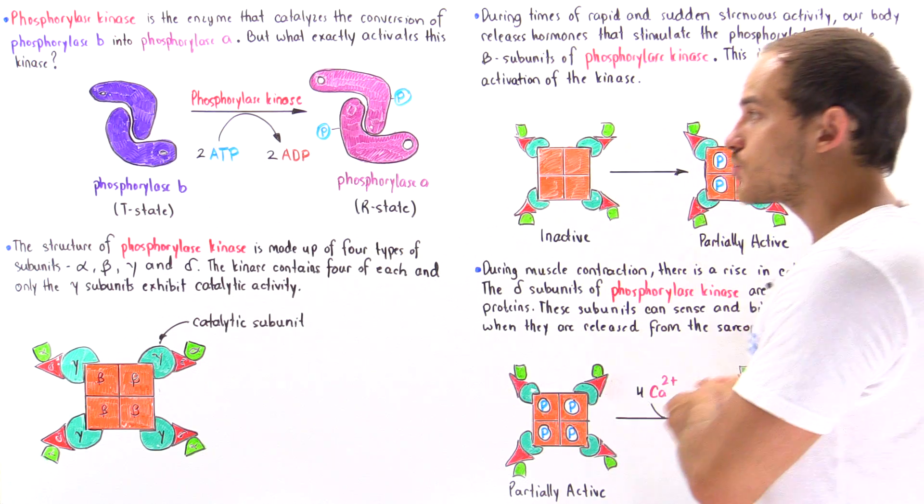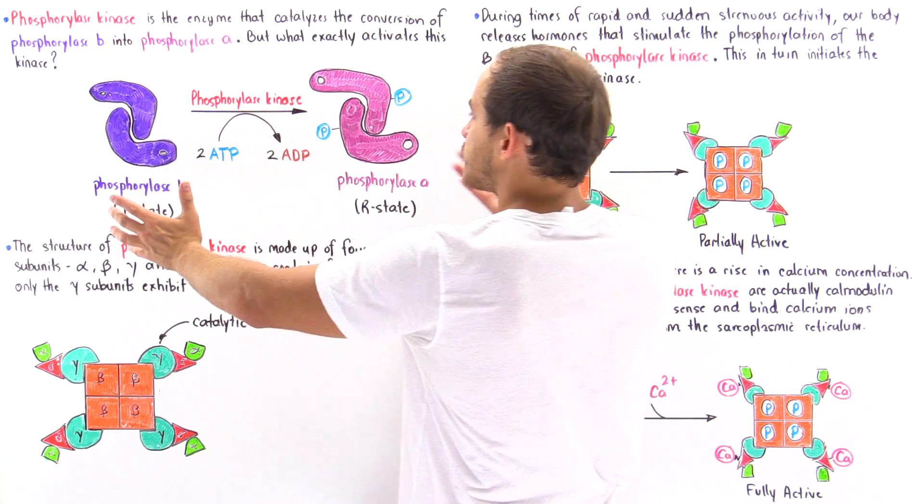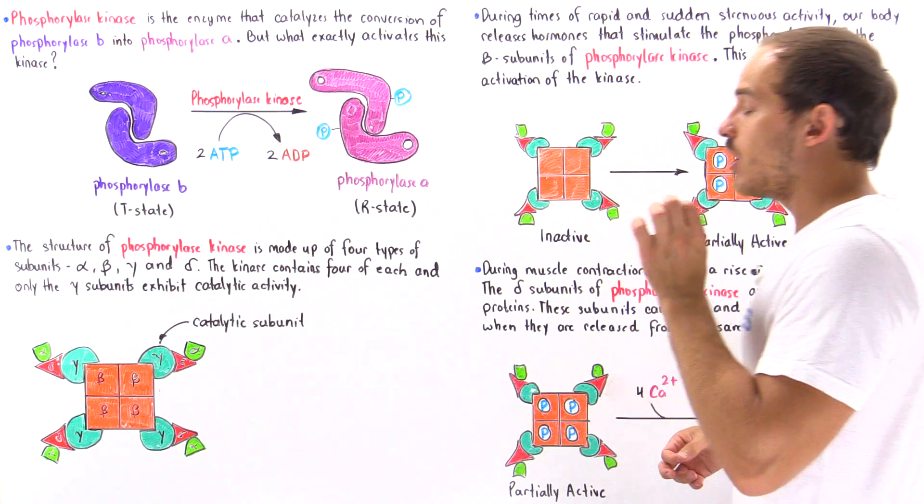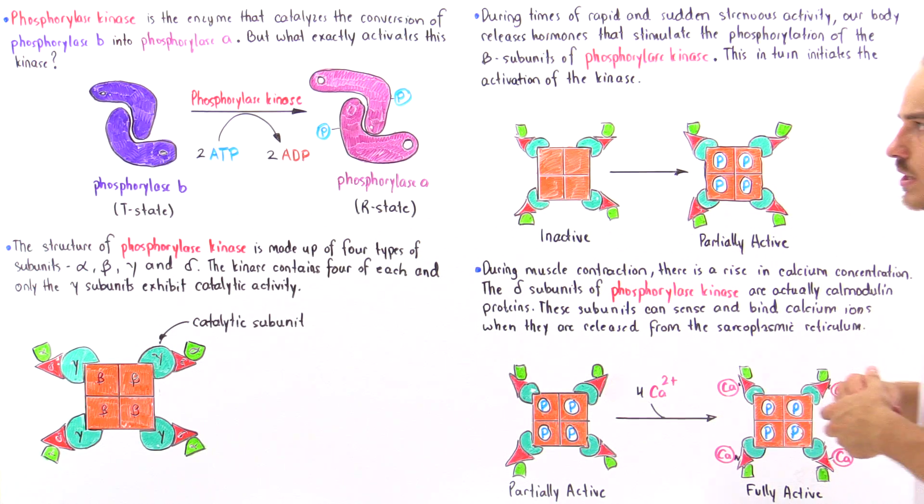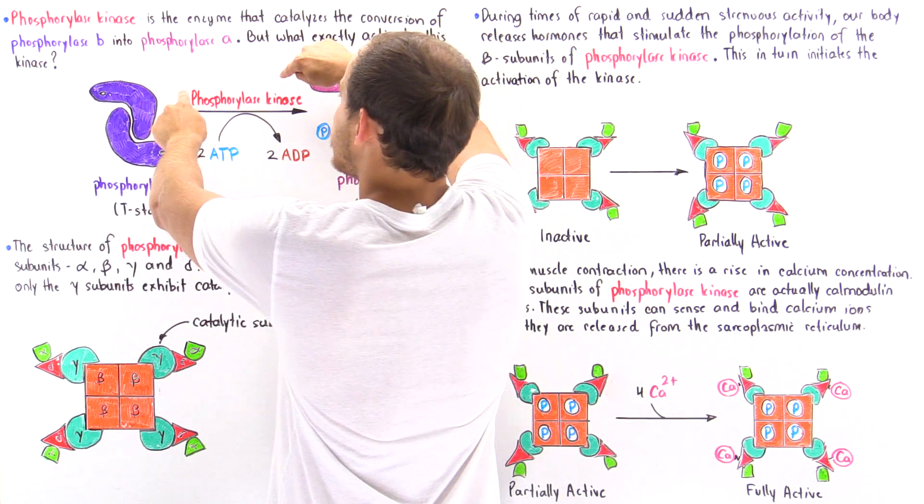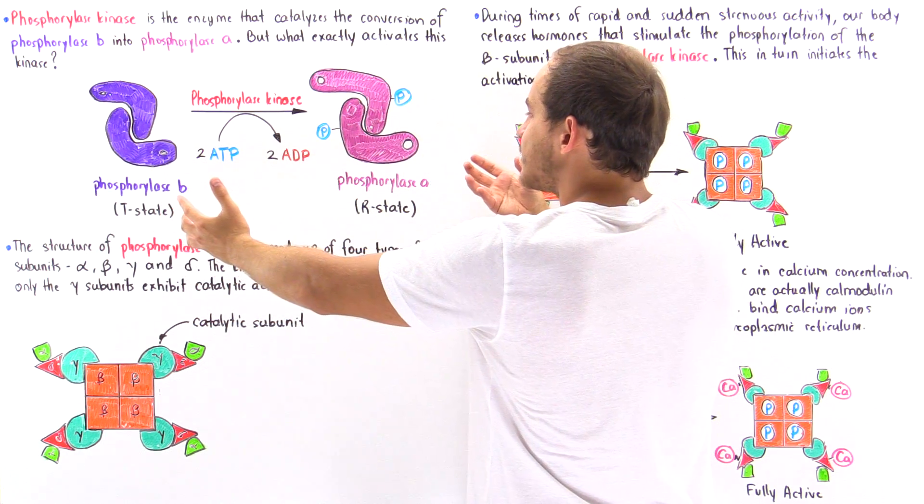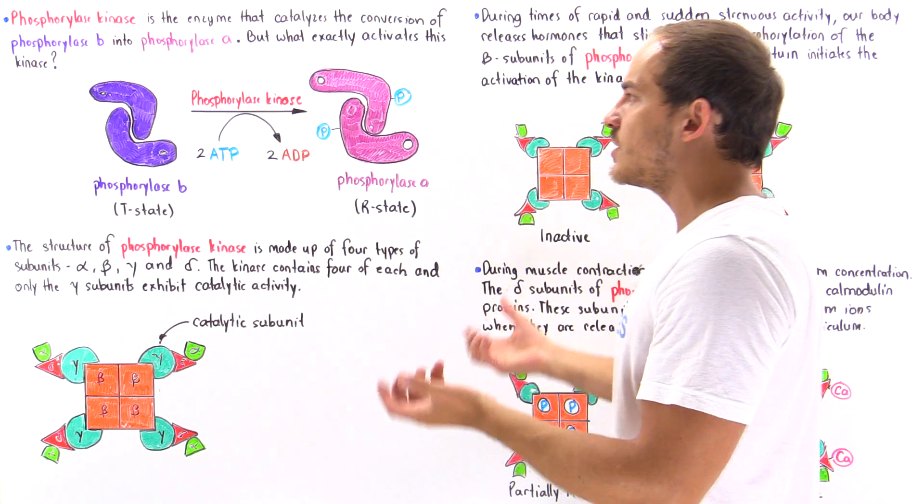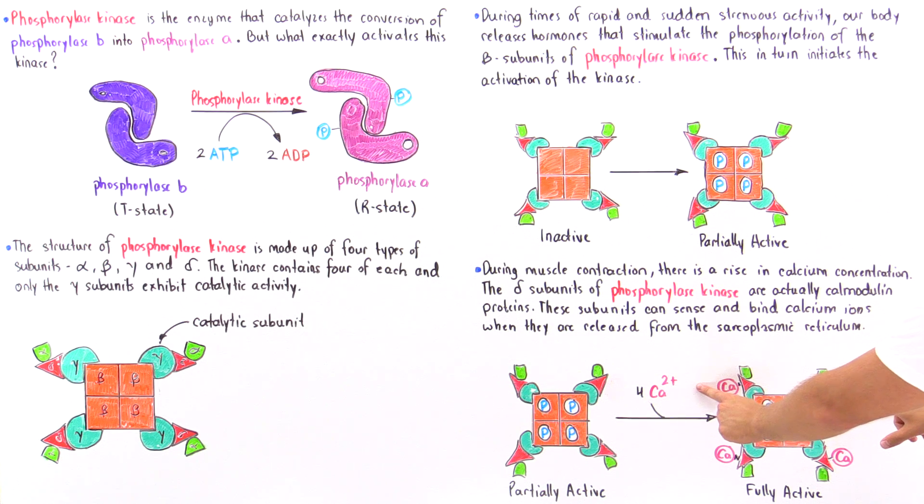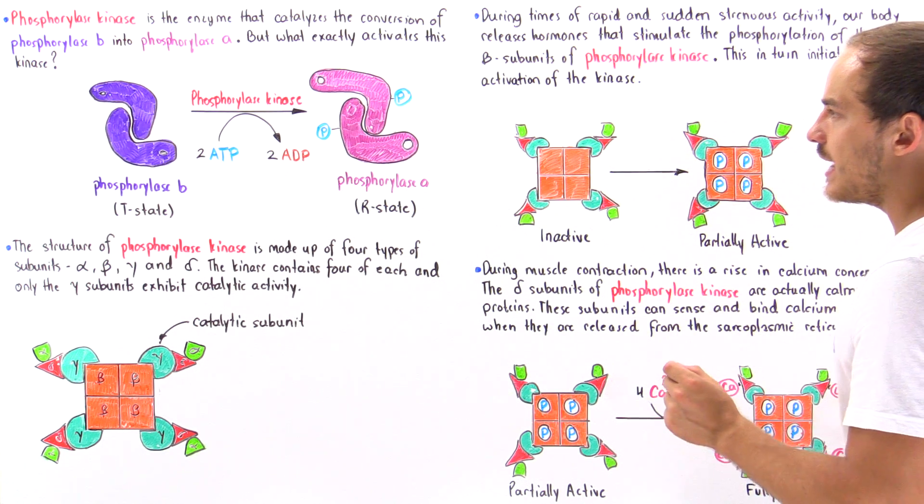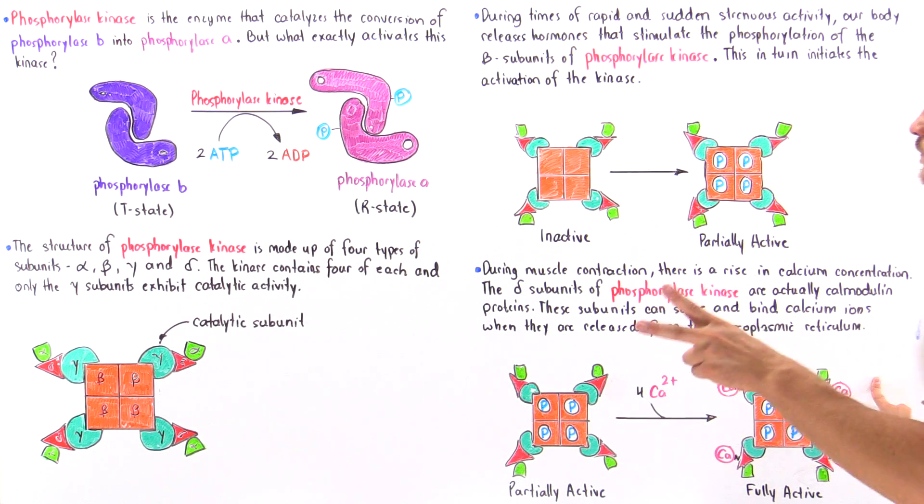So we see that in order for phosphorylase kinase to actually initiate this process, which in turn initiates glycogen breakdown, this molecule itself must be initiated, and it is initiated by two different processes.